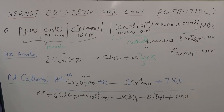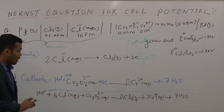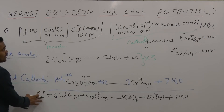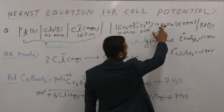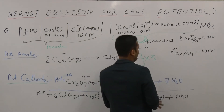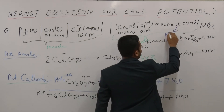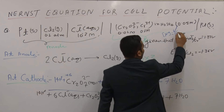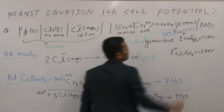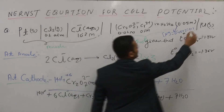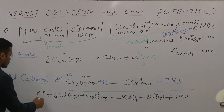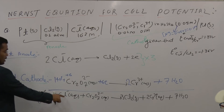After multiplying and adding, write the concentration of each species in the net cell reaction. The concentration of H₂SO₄ is 0.05 M, so the concentration of H⁺ is 0.05 × 2 = 0.1 M. The concentration of Cl⁻ is 0.01 M.